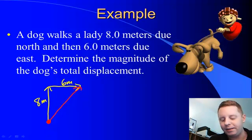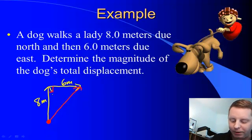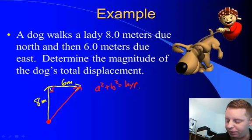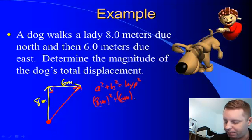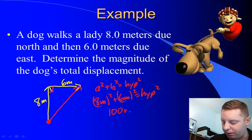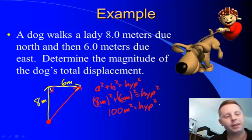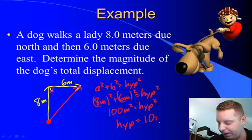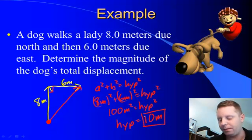How do we figure out how big that is? Well, we could use the Pythagorean theorem, because that's a right triangle. A squared plus B squared equals our hypotenuse squared. Or 8 meters squared plus 6 meters squared equals our hypotenuse squared. Or 100 square meters equals our hypotenuse squared. Take the square root of both sides, and we find out our hypotenuse, or total displacement, must be 10 meters.